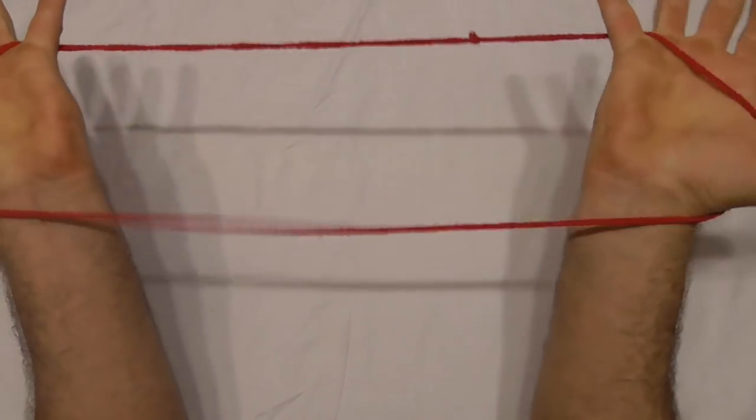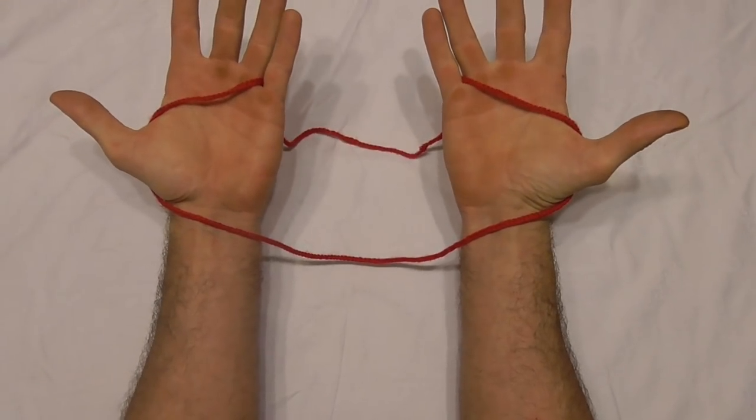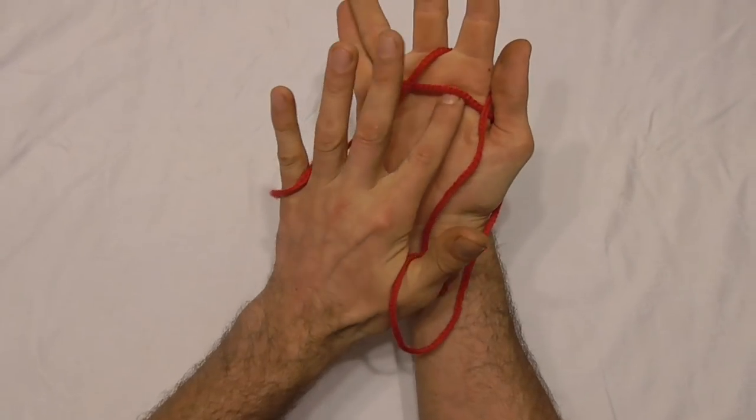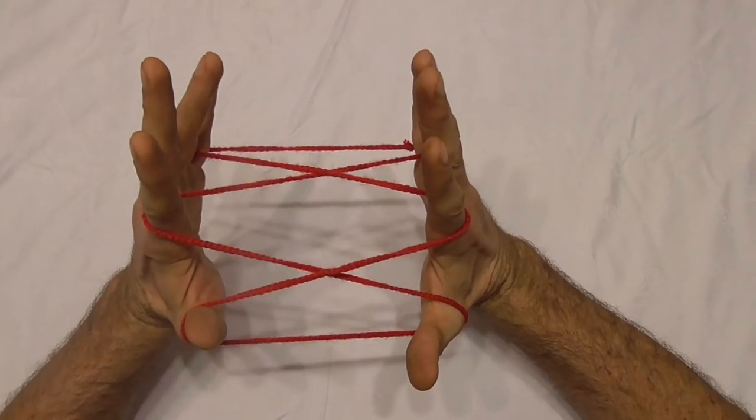To do this string figure, we want to start with the loop of string across our palms and pick up the palm strings with our pointer fingers to do opening A.